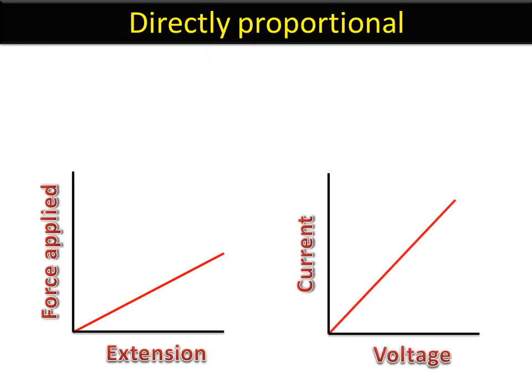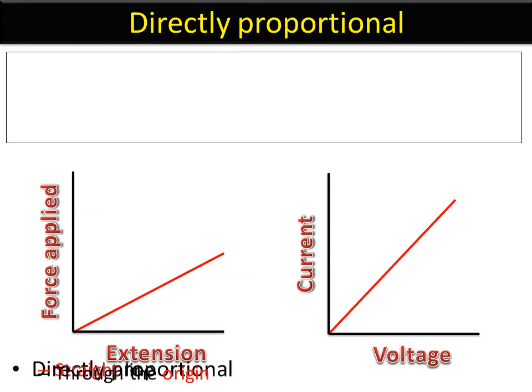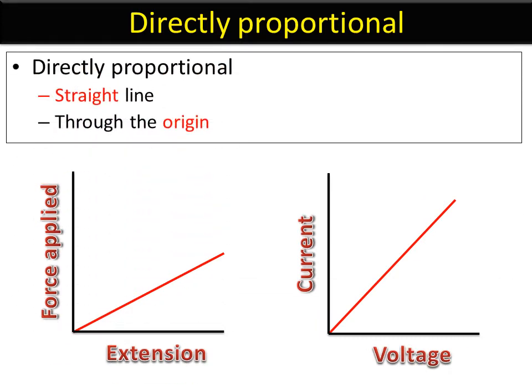Something is directly proportional if it is a straight line and through the origin. So the one on the left here is an example of Hooke's Law, which you'll learn about in P2 Physics. As you apply more force to a spring, as in hang more masses on the bottom, then there will be a directly proportional increase in the extension of the spring.